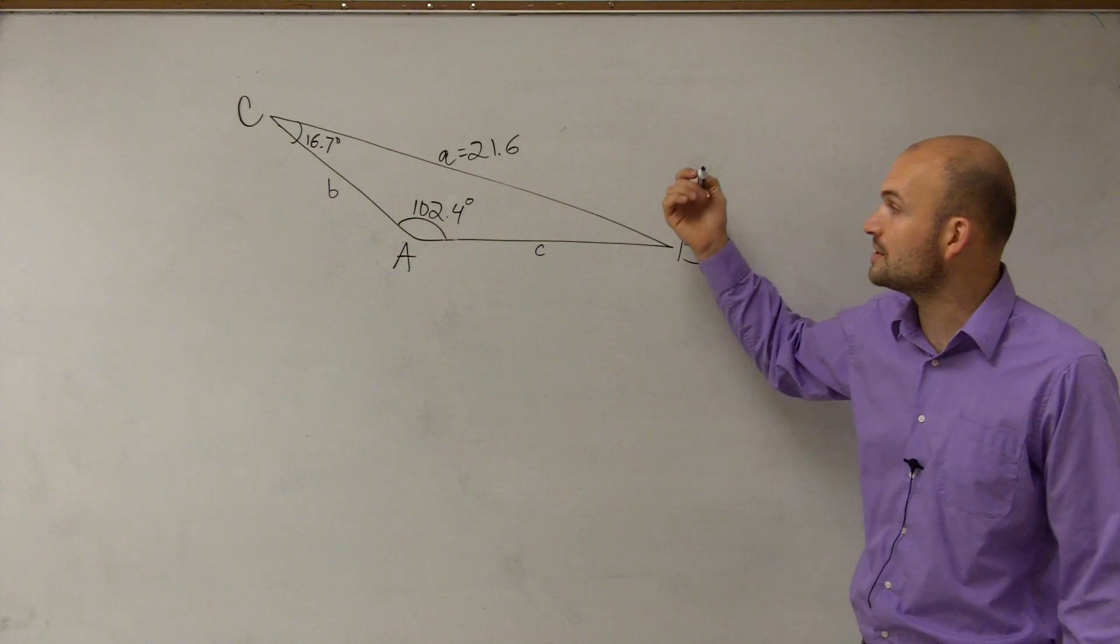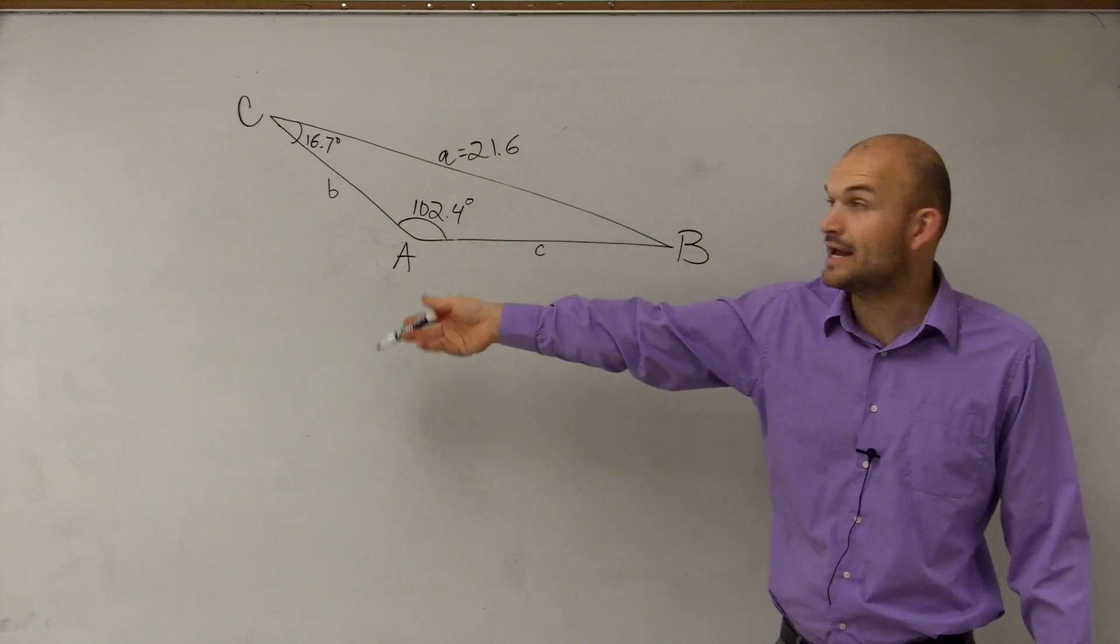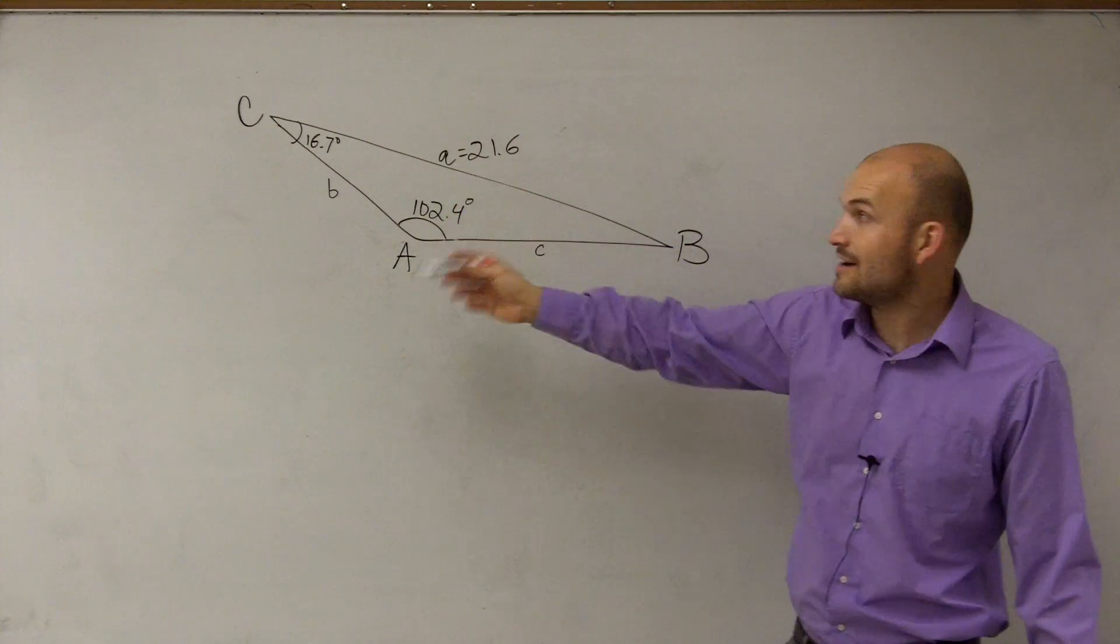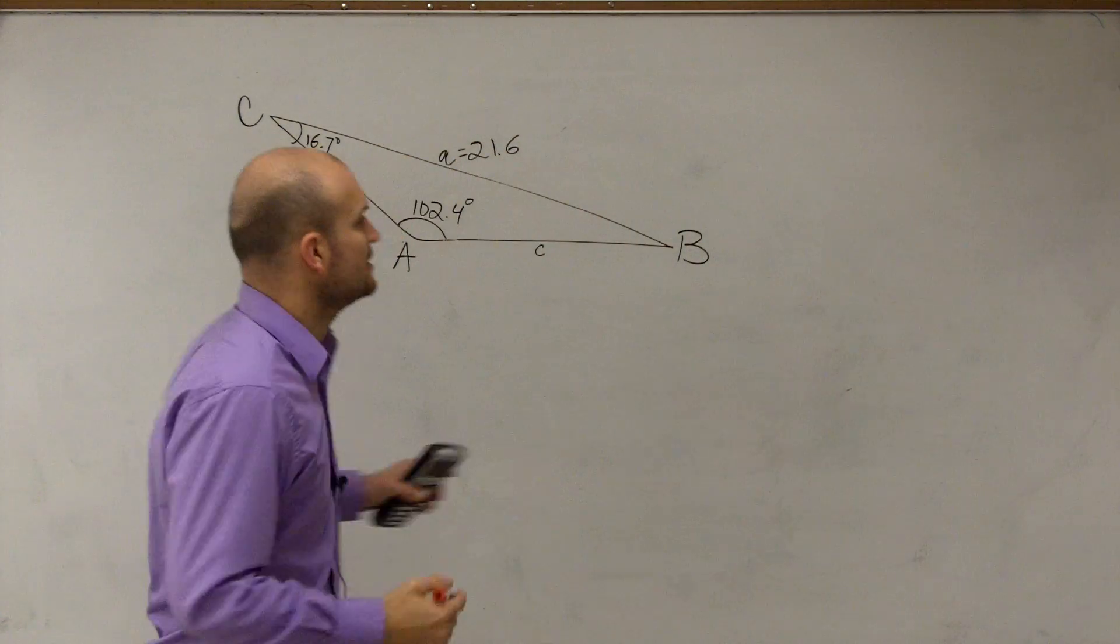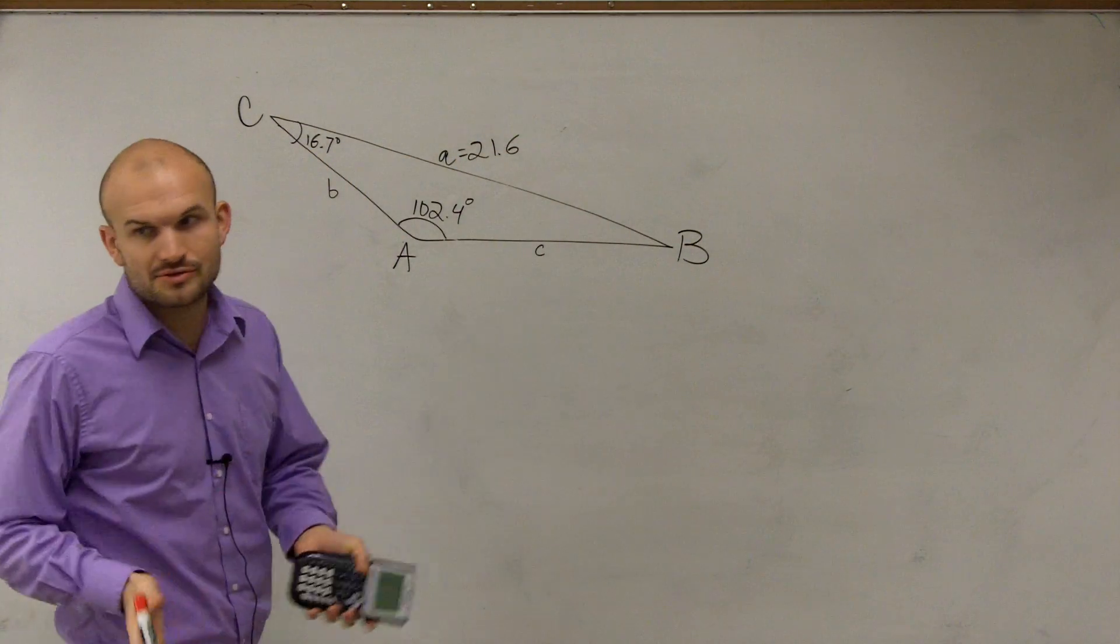So, all right, here we have a triangle, and we notice automatically I have angle A and side length A, and I have one other value. So I automatically think, all right, Law of Sines, I can work with this, right? So let's just write up, until you guys get used to this...